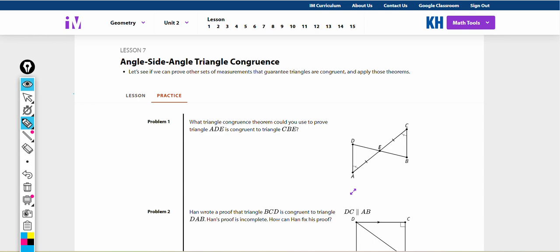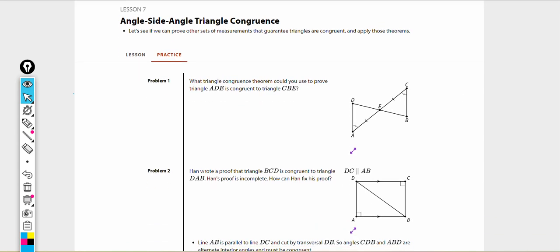Lesson number 7, problem 1. What triangle congruence theorem could you use to prove that triangle ADE is congruent to triangle CBE? If you remember, we have a bunch of different triangle congruence theorems. The A in these congruence theorems stands for angle, and the S stands for side. The other thing to remember is that order matters.